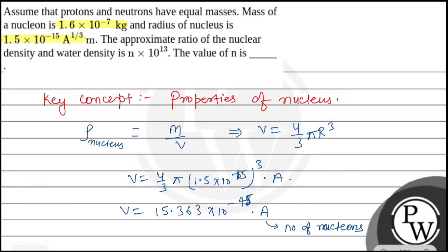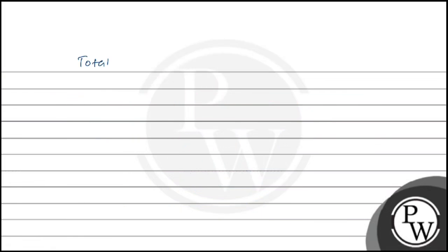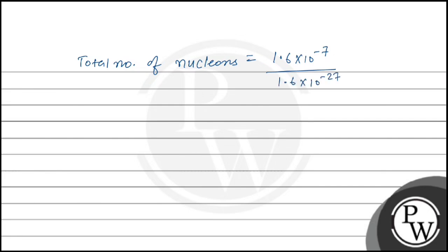The number of nucleons A equals the mass number, which is total mass divided by mass of one proton. So total number of nucleons = 1.6×10⁻⁷ divided by 1.6×10⁻²⁷, which gives A = 10²⁰.